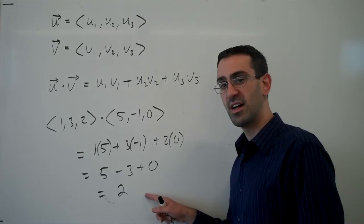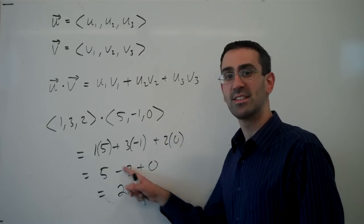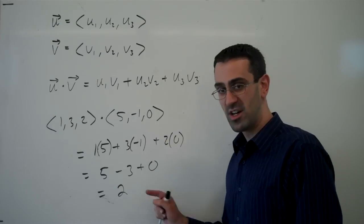Notice that the dot product of two vectors is a scalar, is a simple number. It is not a vector.